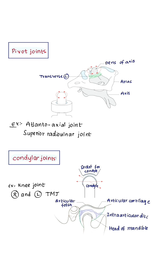Pivot joints: the articular surface of one bone is a pivot or peg, and it is surrounded by an osteocartilaginous ring. Examples include the atlanto-axial joint and the superior radioulnar joint.